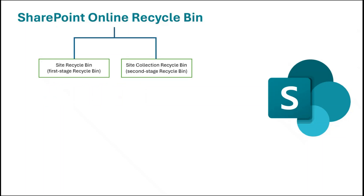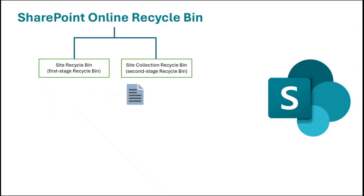For example, let's assume we deleted a document from the document library. That document will go to the first stage Recycle Bin and will be retained there for 93 days. Now let's say after 20 days we deleted this document from the first stage Recycle Bin. This document will then move to the second stage Recycle Bin and will be retained there for 73 days, after which the document will be permanently deleted.